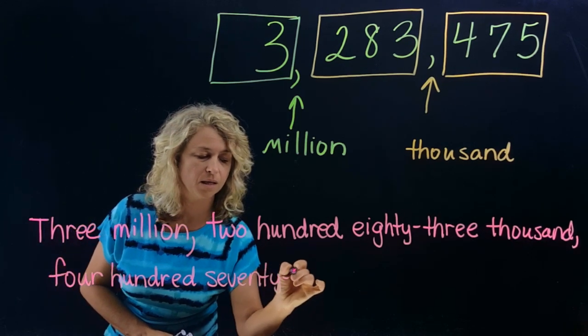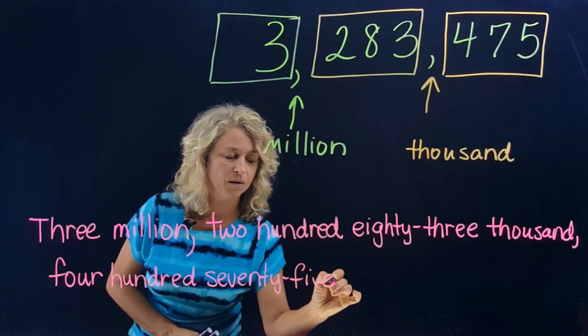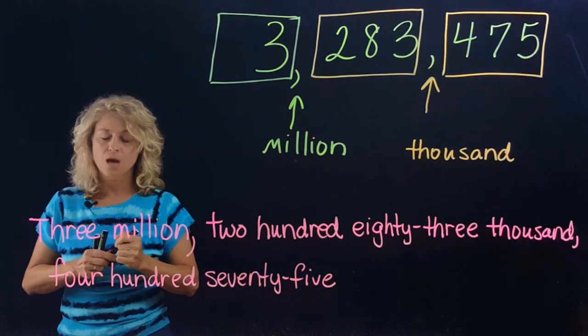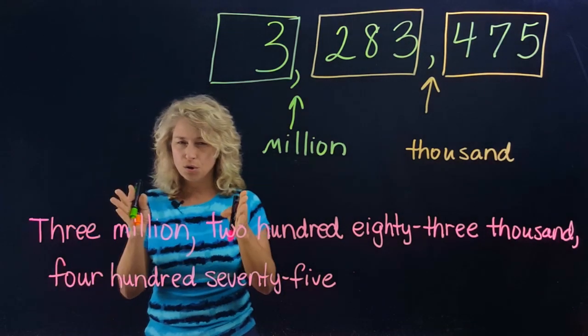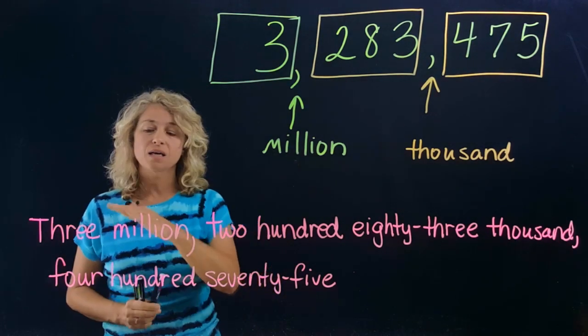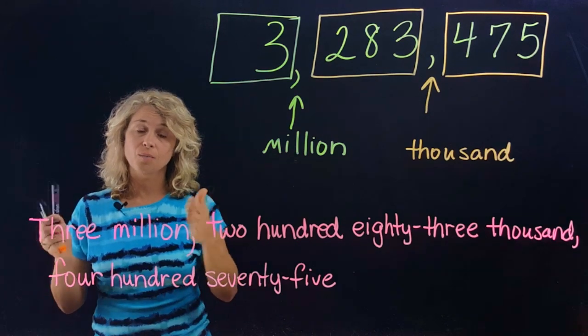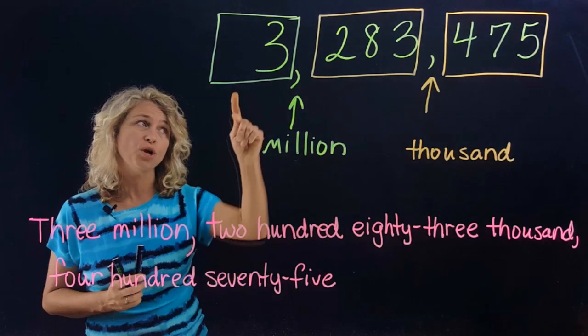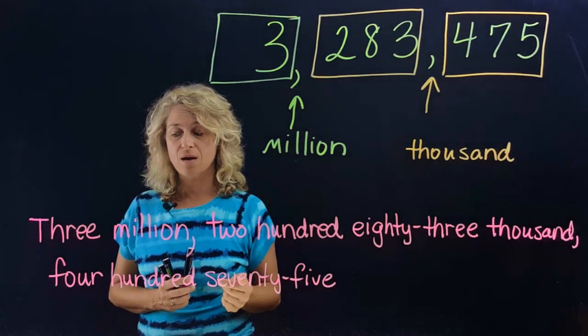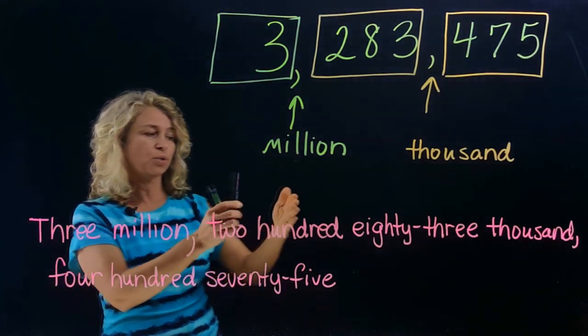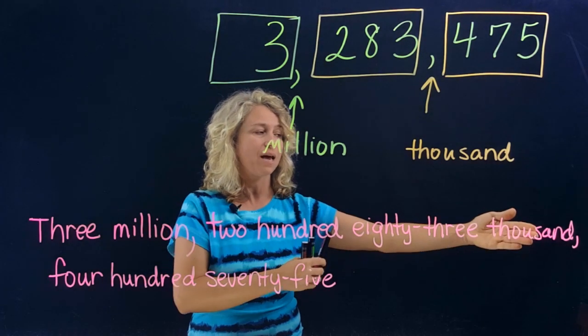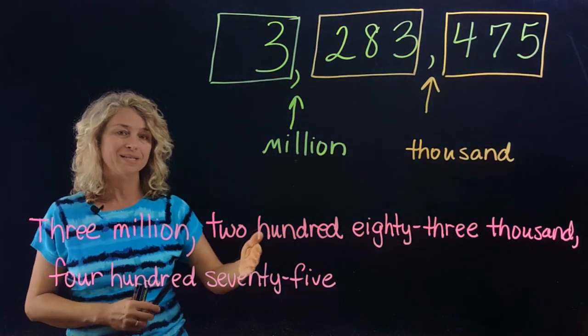And seventy-five. Now whether you know how to spell all these words correctly or not, you would be able to recognize this in a multiple choice problem, because you know how to say this number correctly. So you could pick this out: three million, two hundred eighty-three thousand, four hundred seventy-five. Does that give you confidence?